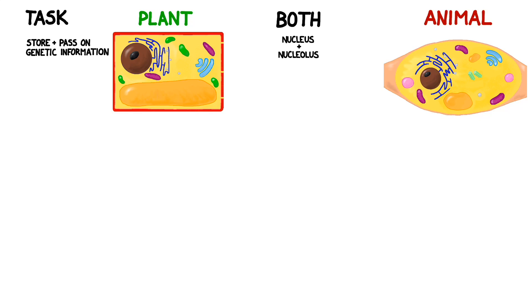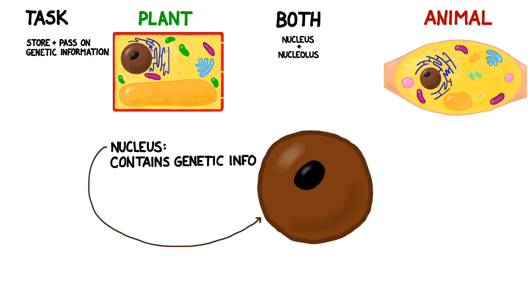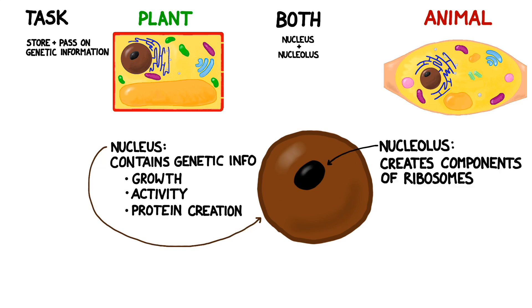To store and pass on genetic information, both plant and animal cells use a nucleus and a nucleolus. The nucleus contains genetic information that controls growth, cellular activity, and protein creation. The nucleolus assembles components of ribosomes which play an important role in protein creation.